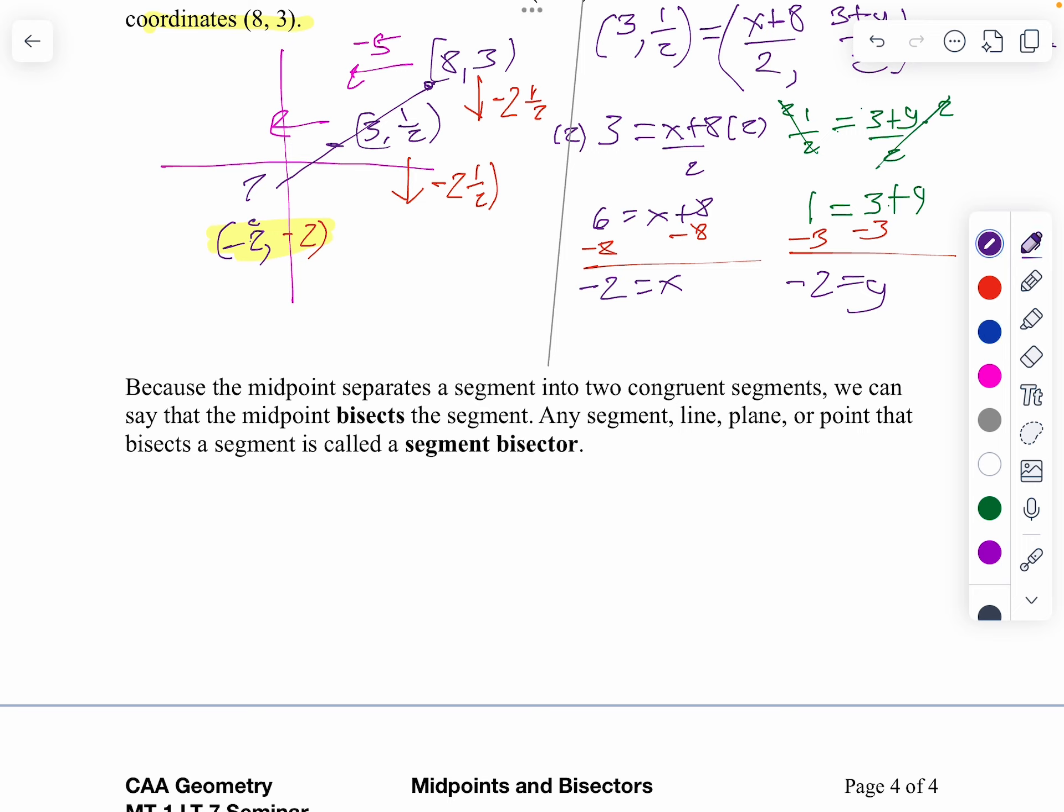Next vocabulary word. We have a segment bisector. A segment bisector is any line that goes through the midpoint. So this would be my segment bisector. Call this line L. It's going to cut those in half. It doesn't matter what angle it goes through. It just has to go through the midpoint.